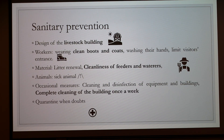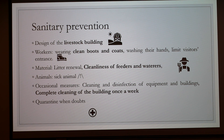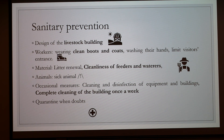For sanitary prevention, you have to pay attention to the design of the livestock buildings. Workers have to wear clean boots and coats, wash their hands, and limit visitor entrance. The litter has to be renewed regularly. You have to pay attention to the cleanliness of feeders and waterers, and store food in a dry and clean place. When an animal is sick, you have to pay close attention, and when you have a doubt, put it in quarantine. There is also occasional disinfection of equipment and buildings, including cages, feeders, nest boxes, and curtains.